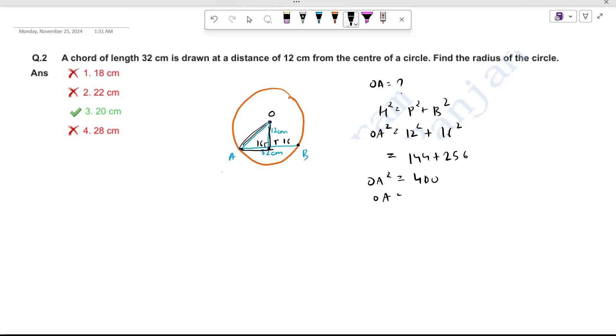OA square is 400. So OA will be square root of 400, which is 20.